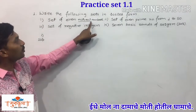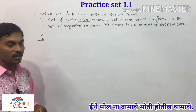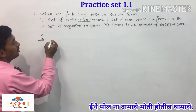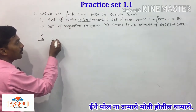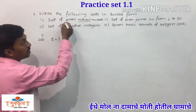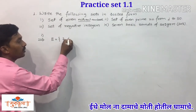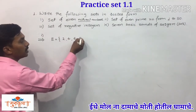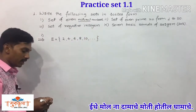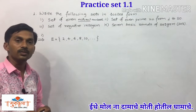When we have to write the set of even natural numbers, we will represent it as E equals — we can use any capital letter. We have to write even natural numbers, and even natural numbers start from 2. So we write: E = {2, 4, 6, 8, 10, ...} and so on. There are infinite even natural numbers.